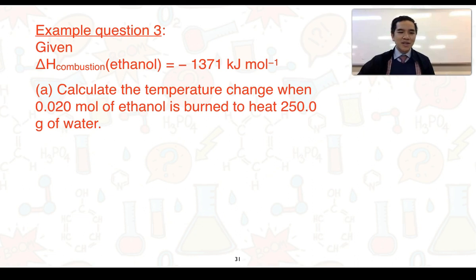To look at how we can use this we've got example question three. Given the enthalpy of combustion for ethanol is −1371 kilojoules per mole, for part a, calculate the temperature change when 0.020 moles of ethanol is burned to heat 250.0 grams of water.